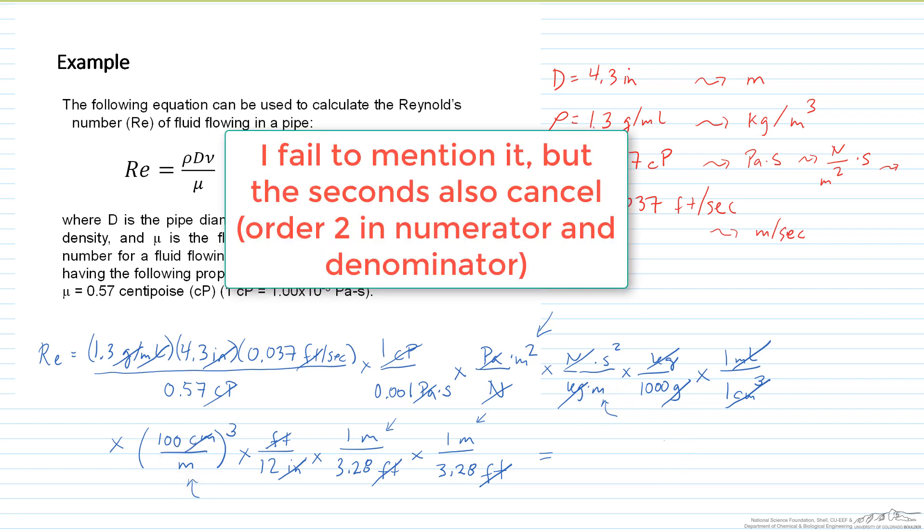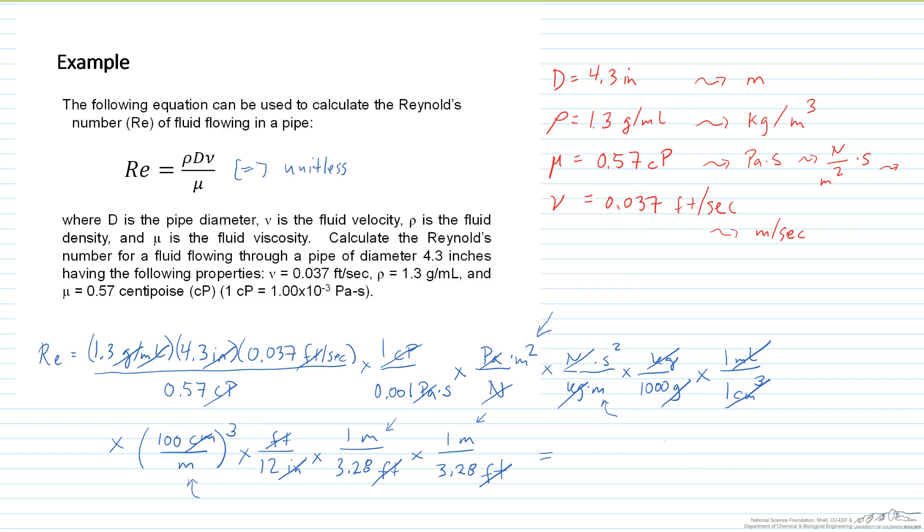Now all we need to do is just take all the values and do the multiplication and division. And what we end up with is a Reynolds number of approximately 2,800. Remember we just want to leave that to two significant figures because basically all of our inputs here into the Reynolds number have two significant figures, so we don't want to artificially create more precision than we are given. So that's our answer, the Reynolds number would be 2,800.